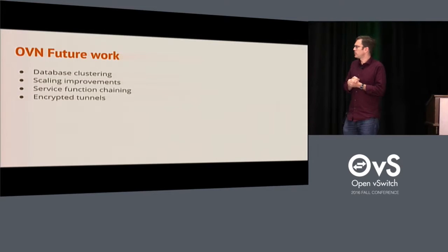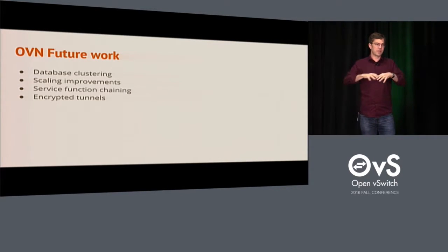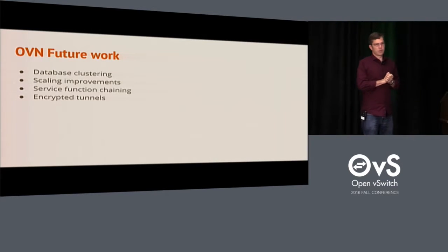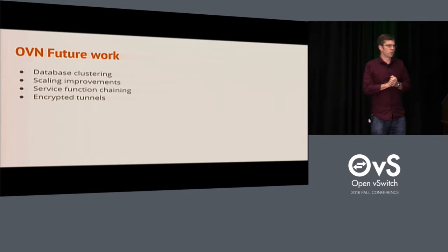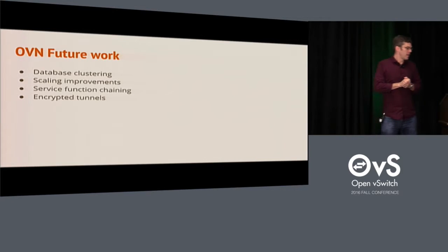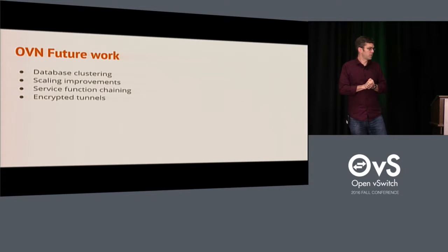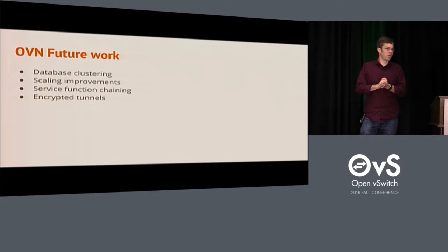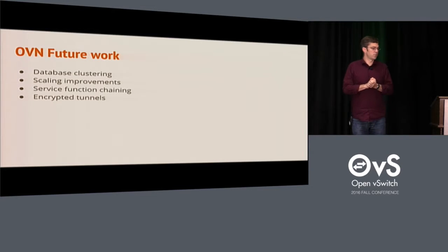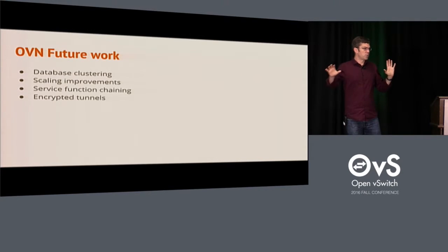Future work for OVN: central to the design is a database. We have a central database to manage all state. Right now it's a single database, and we recognize that needs to be improved, so we're looking at adding Raft support. Scaling is very important — we've tested at the low thousands and would like to get to 10,000 virtual ports. Service function chaining will be important as we introduce additional services like firewall and load balancing. There will be a talk later today on that. We'd also like encrypted tunnels by default so that between any two hypervisors all traffic is encrypted.